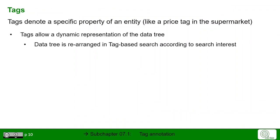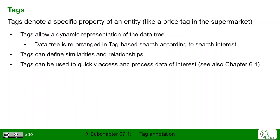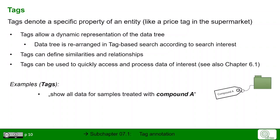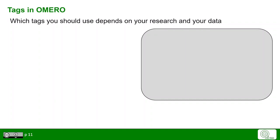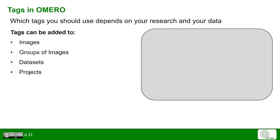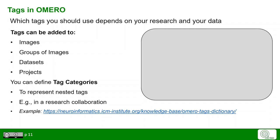Let's start with tags. Tags denote a specific property of an entity, like a price tag in the supermarket. They allow the dynamic re-representation of the data tree, rearranged based on tag searches according to the researcher's interest. Tags can define similarities and relationships and thus allow quick access and processing of data of interest. For example, you can make OMERO search for all samples treated with compound A, or all data for samples incubated for three hours, or all data recorded with a specific instrument. You can add tags at all given levels: to images, groups of images, datasets, and projects.